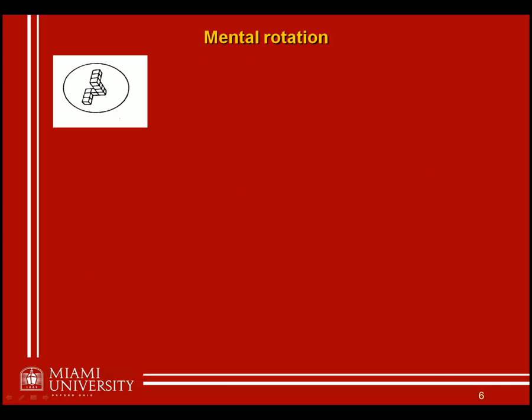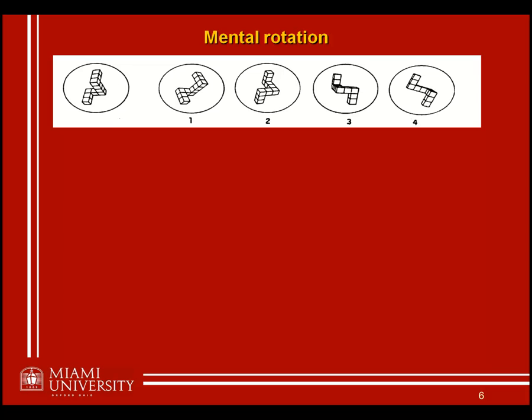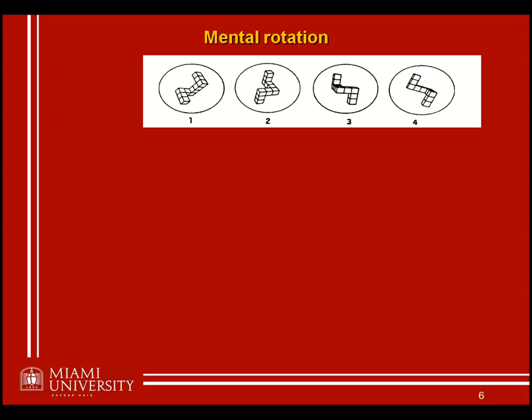Consider a mental rotation task as we looked at before, where you're shown one stimulus and then have to identify which of other possible candidate stimuli it matches. Given the shape on the left, which of one, two, three, or four matches this shape rotated somehow through space? The answer is number one. As I mentioned, males tend to do slightly better on these types of spatial perception and spatial manipulation tasks.